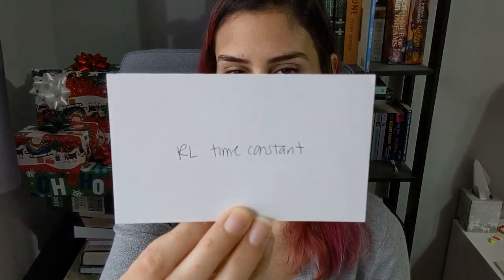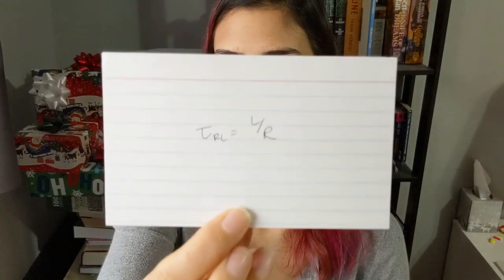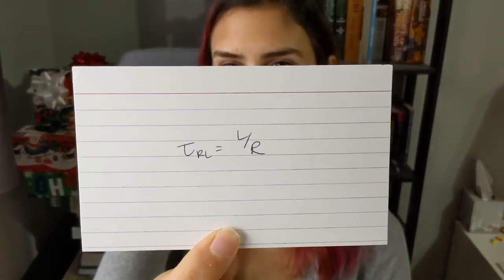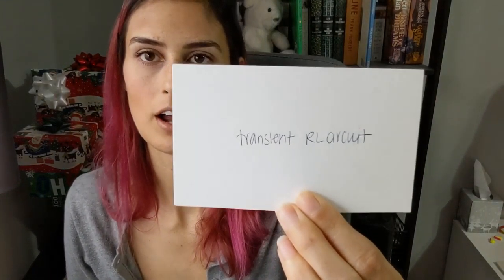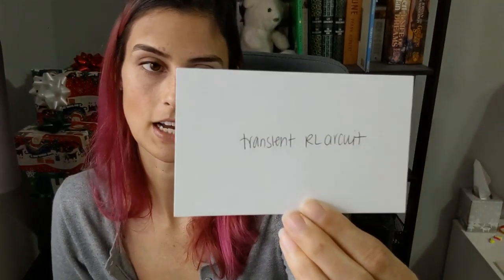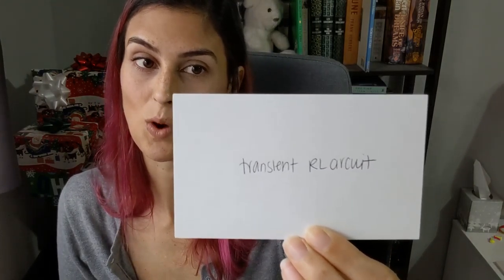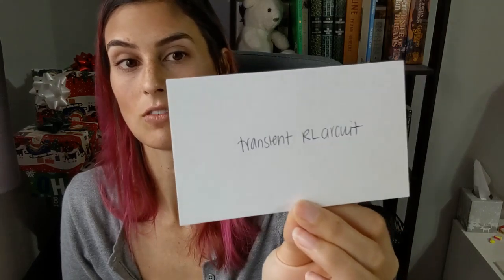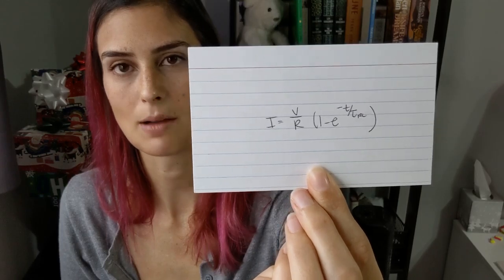The RL time constant: tau RL equals L divided by R. A transient RL circuit — looking for an expression for the current as a function of time: I equals V over R times one minus e to the negative t over tau RL, where tau RL is the RL time constant.